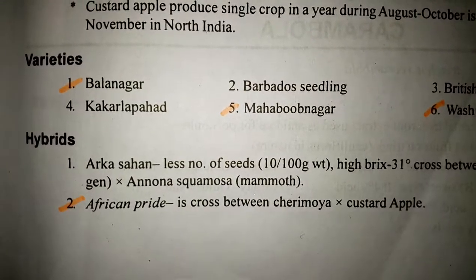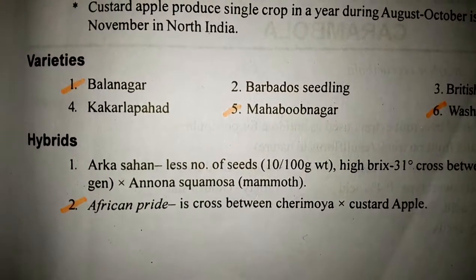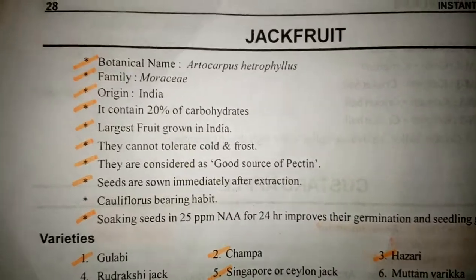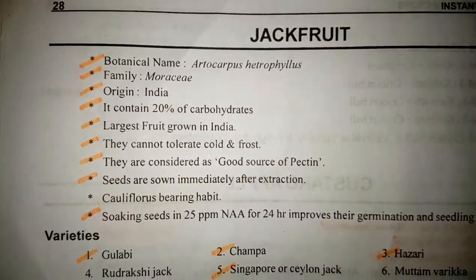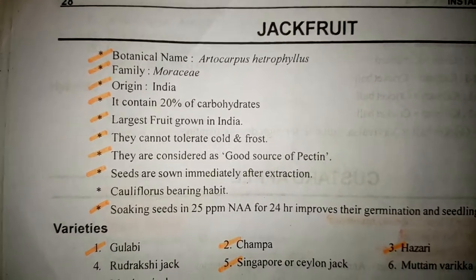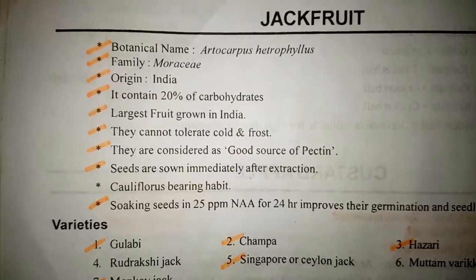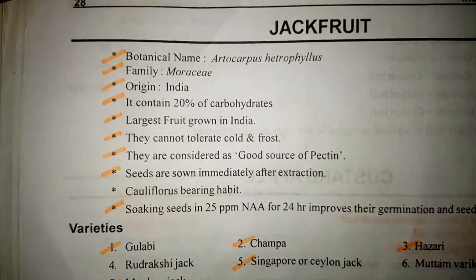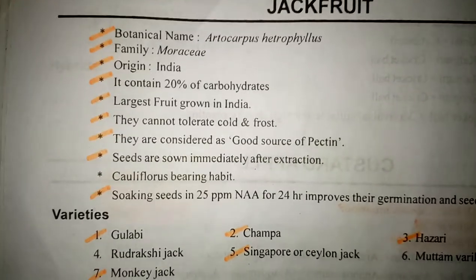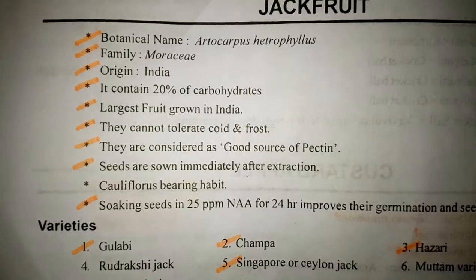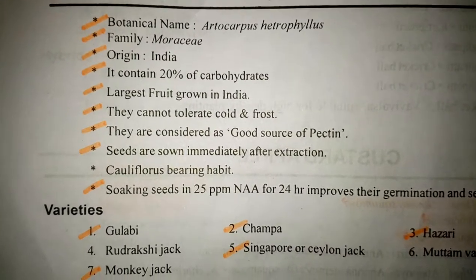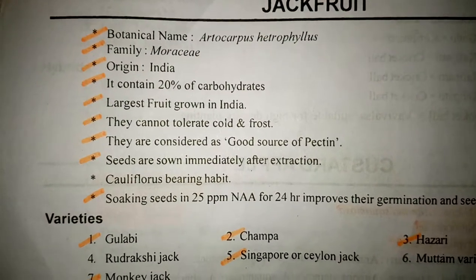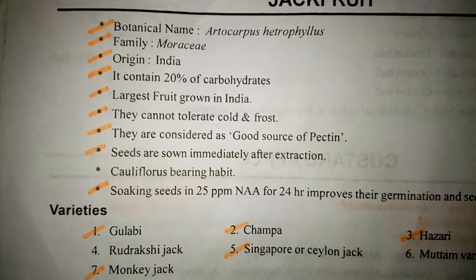The most common varieties are Balanagar, Mahbubnagar, and Shintan. The hybrid variety is African Pride, which is a cross between Cherimoya and Custard Apple. These are the most important varieties of Custard Apple.